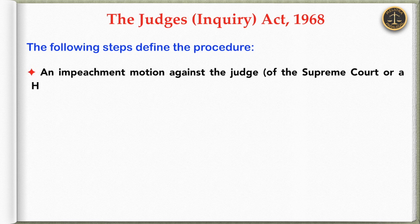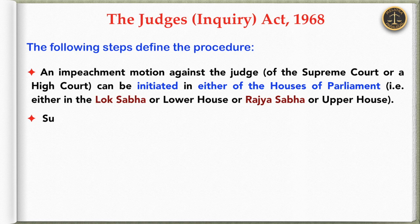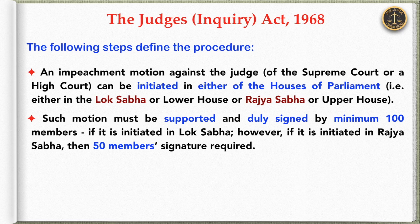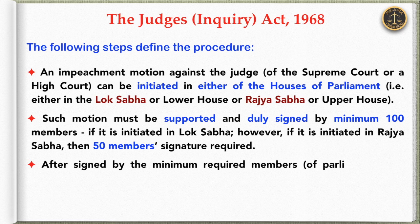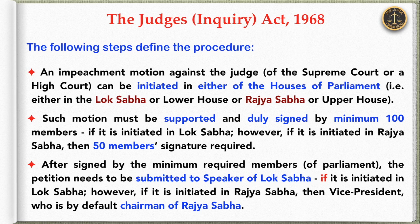An impeachment motion against a judge of the Supreme Court or a High Court can be initiated in either House of Parliament, that is, either in the Lok Sabha (Lower House) or Rajya Sabha (Upper House). Such motion must be supported and duly signed by a minimum of 100 members if initiated in Lok Sabha, or 50 members' signatures if initiated in Rajya Sabha. The petition needs to be submitted to the Speaker of Lok Sabha, or, if initiated in Rajya Sabha, to the Vice President, who is by default the Chairman of Rajya Sabha.